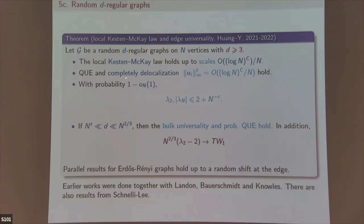We prove the Kesten-McKay law all the way down to d = 3, up to the scale log n / n. The Kesten-McKay law is correct for d ≥ 3, eigenvectors are completely delocalized, and we prove the second eigenvalue satisfies |λ_2| ≤ 2 + O(n^{-c}). A previous result had error term O(log n); we improved this to n^{-c}, and are trying to improve further.